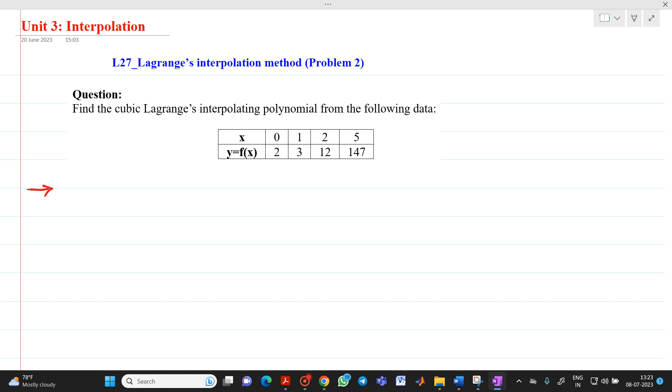Here, we are going to find a cubic polynomial. Find the cubic Lagrangian interpolating polynomial from the following data. We have this data, this will be your x0, then x1, x2, and x3.